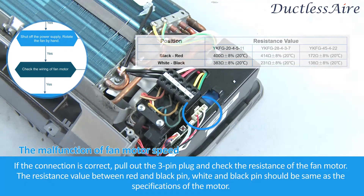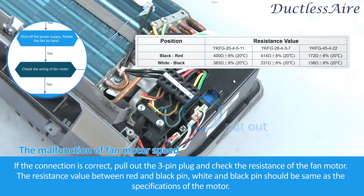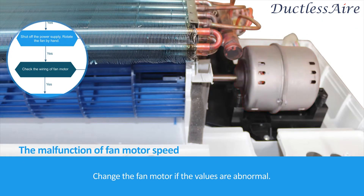If the connection is correct, pull out the 3-pin plug and check the resistance of the fan motor. The resistance value between the red and black pin, and between the white and black pin, should be the same as the specifications of the motor. Change the fan motor if the values are abnormal.